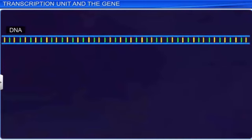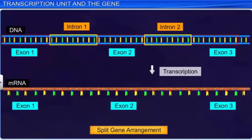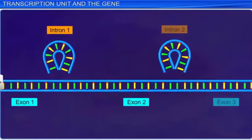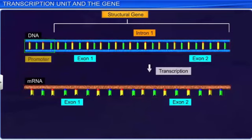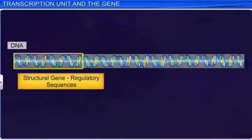The monocystronic structural gene has a split gene arrangement, where sequences called introns and exons are present. However, in this gene arrangement, only the exons act as coding sequences. The process of transcription helps remove introns and joins exons as functional messenger RNA. It is the exons in the structural gene, along with the promoter, which determine the inheritance of a character. The structural gene also consists of regulatory sequences, which regulate the functions of other genes but do not code for any RNA or protein. They are also known as regulatory genes.